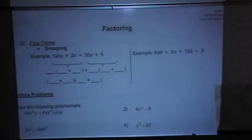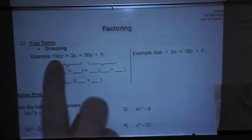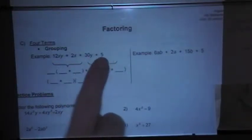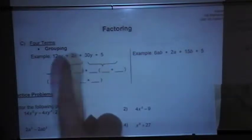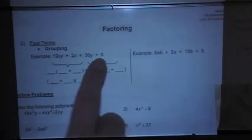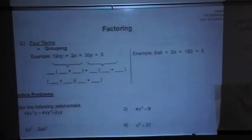In this particular example, there is not, because even though 2 would go into 12 and 2 and 30, 2 will not go into 5. And to be a GCF, it has to go into all of the terms inside of the polynomial. So this one does not have a GCF.